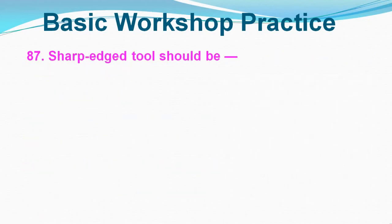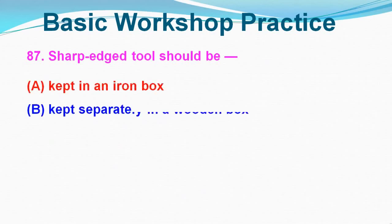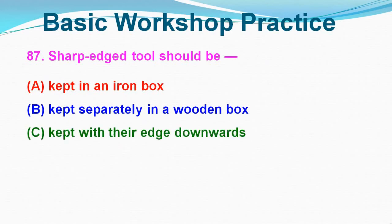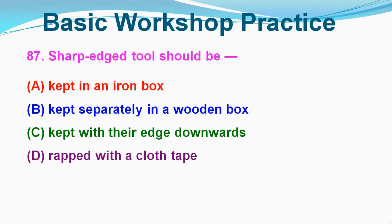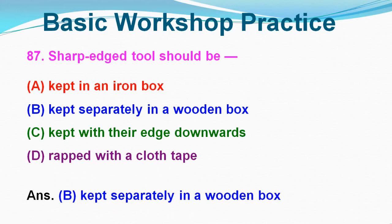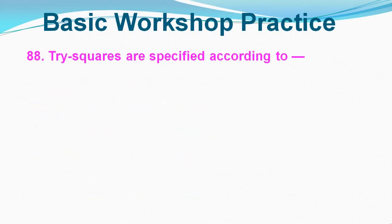Question No. 87: Sharp edged tools should be which of the following? Option A: Kept in an iron box, Option B: Kept separately in a wooden box, Option C: Kept with their edge downwards, Option D: Wrapped with a cloth tape. Correct answer is Option B, Kept separately in a wooden box.